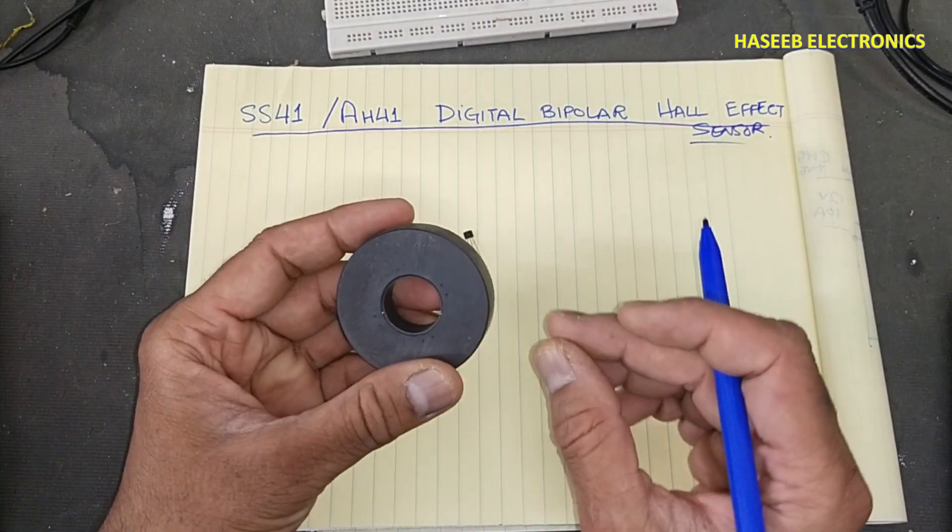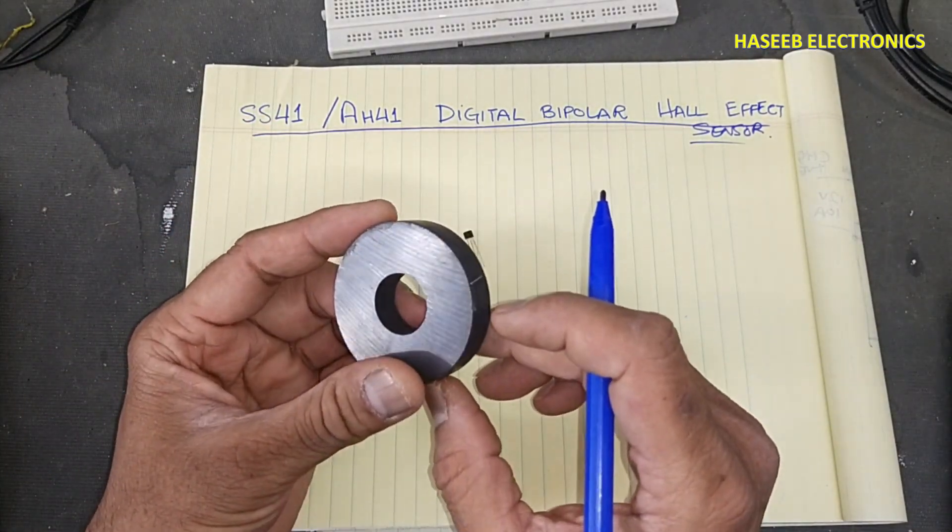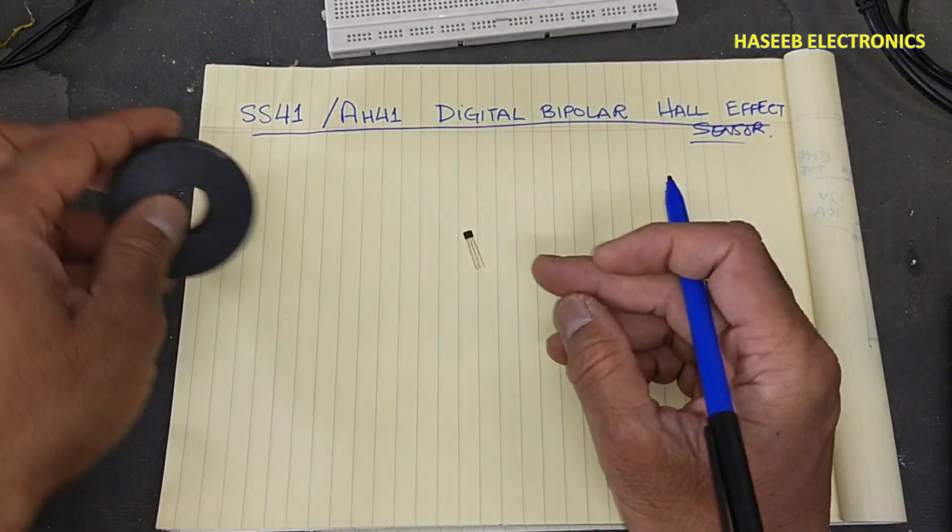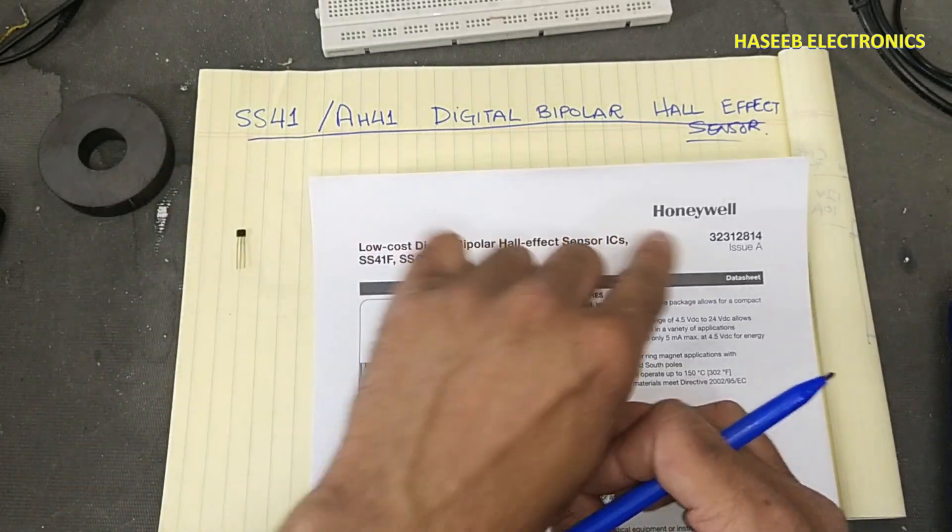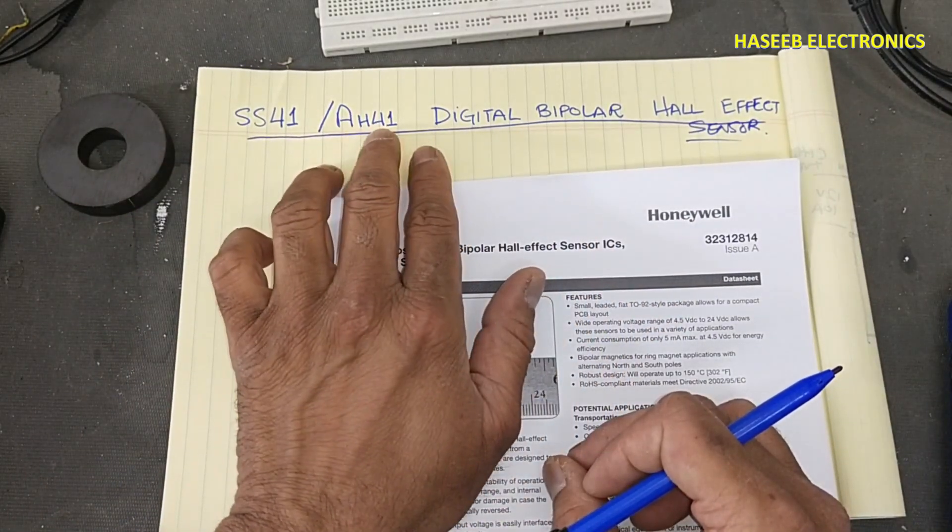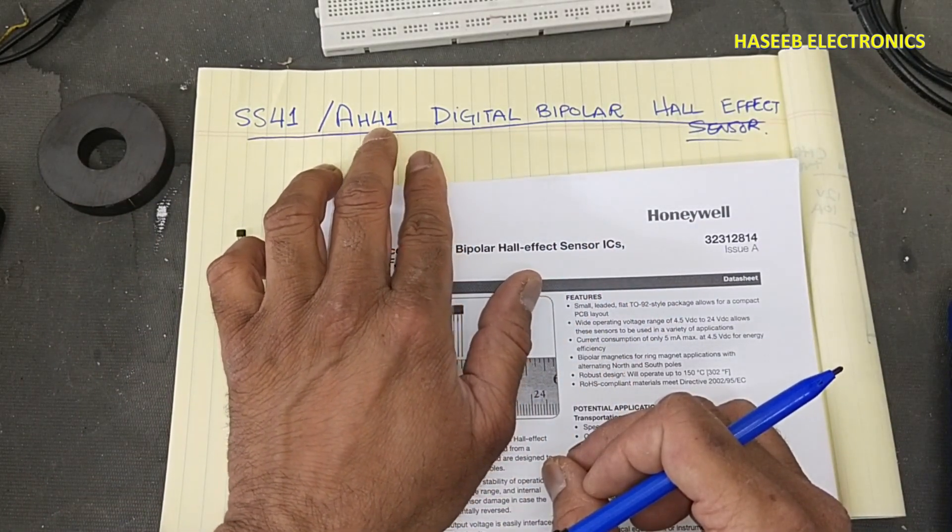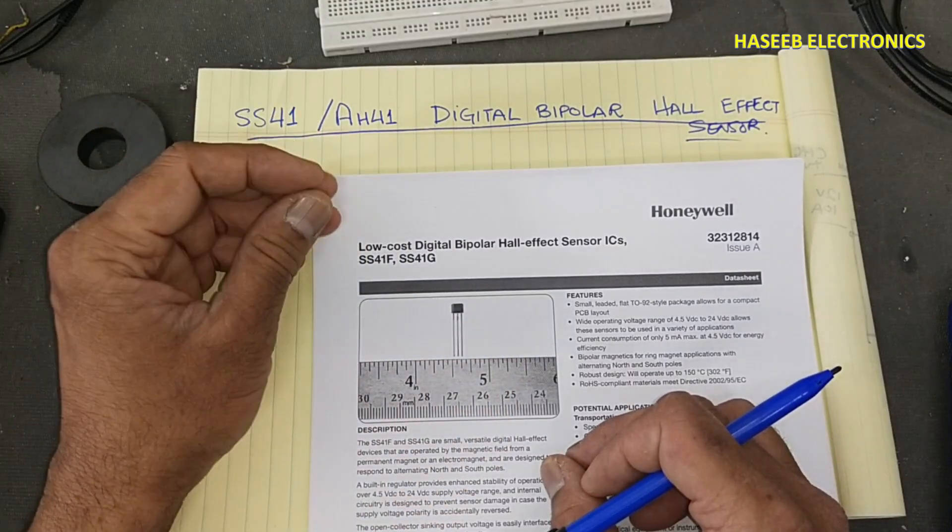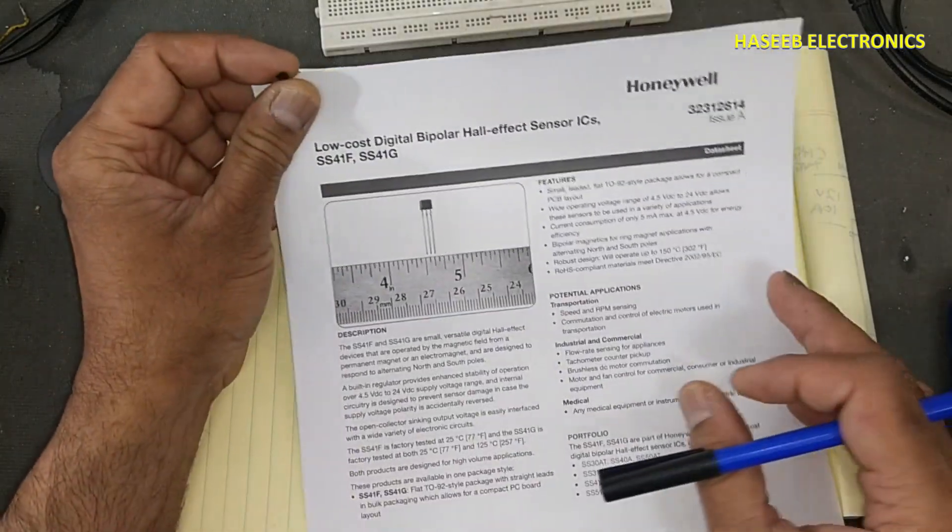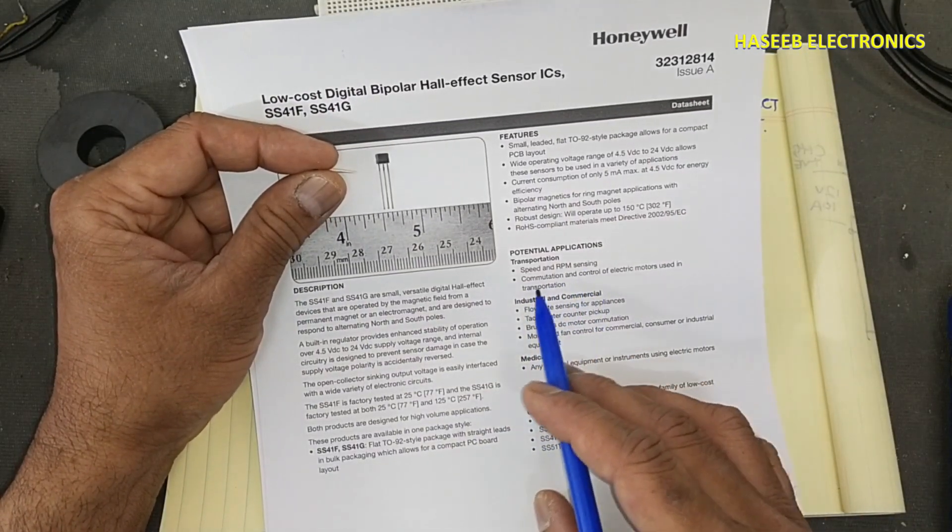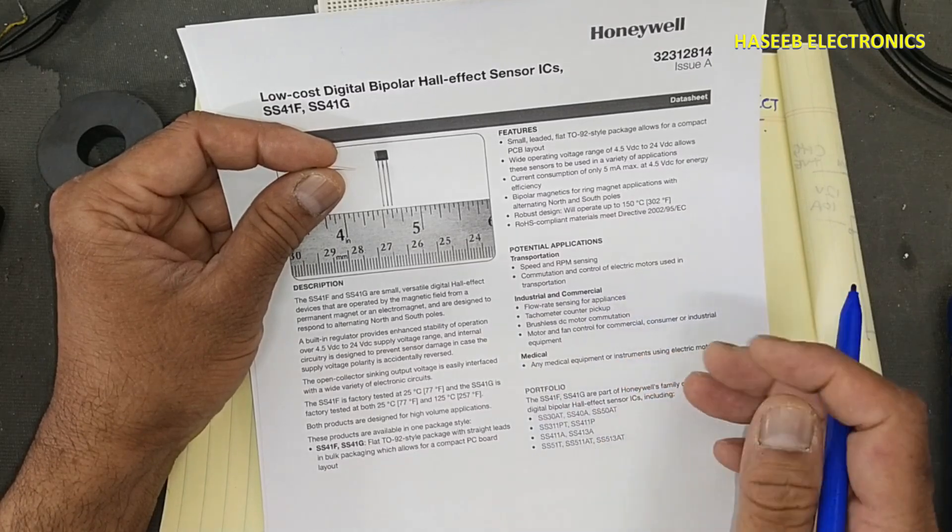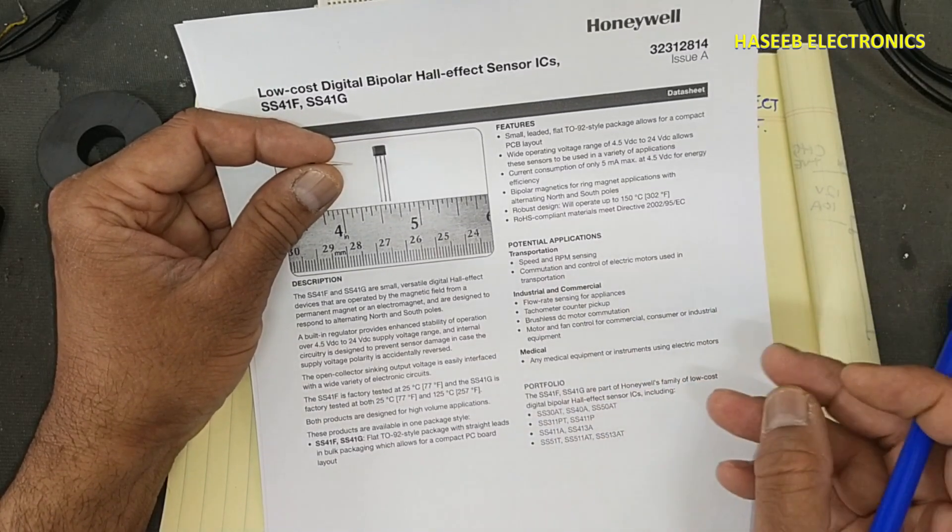Part number SS41 is from Honeywell, AH41 is from Diode Incorporated. The function of both part numbers is the same. It is normally used in speed and RPM detection, commutation and control of electric motors used in transportation.